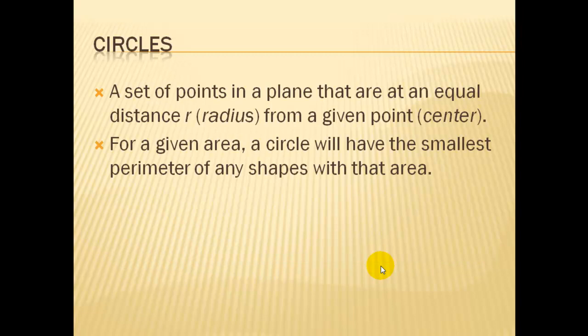Our formal definition of a circle is that it's a set of points that are in a plane that are equal distance from a center or a given point. That distance from the center to any point on the circle is called our radius.